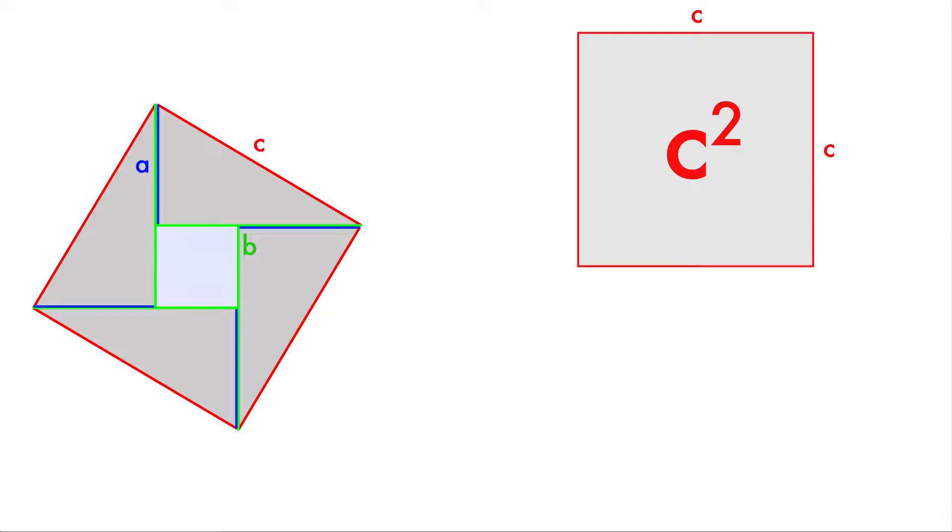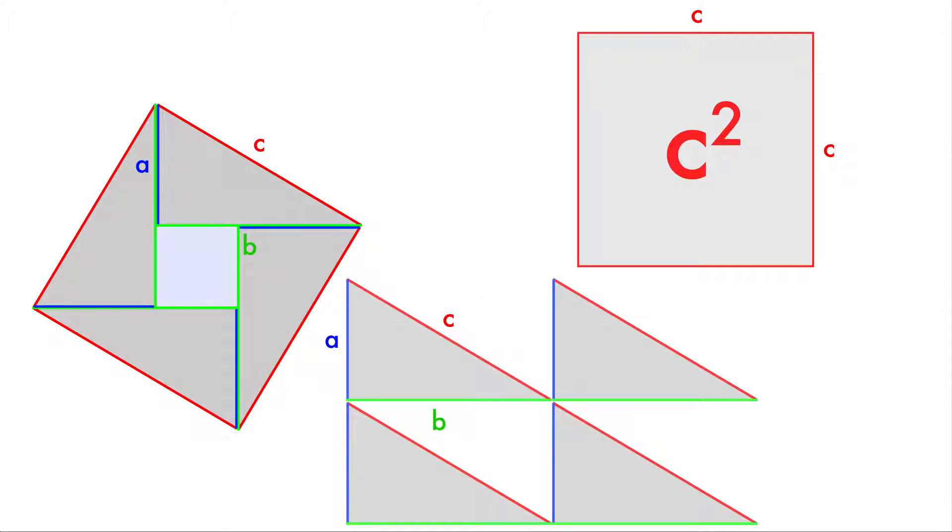Well, so what's another way we could calculate the area of that square? Another way is we could add up all the little parts, right? This square is four little triangles. So if we could find the area of each triangle, we could add those up, plus that little square in the middle. So if we could add up the area of each of those four triangles, and then add up the area of that little square in the middle, we would have another way of calculating the area of the big square.